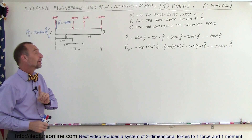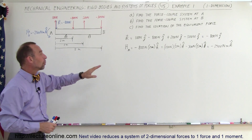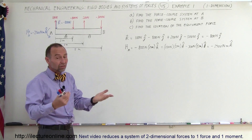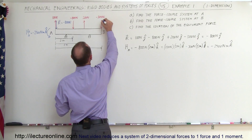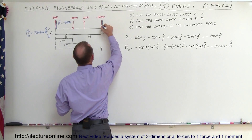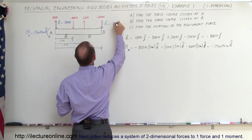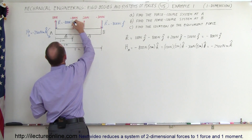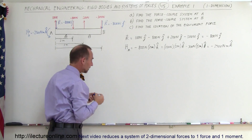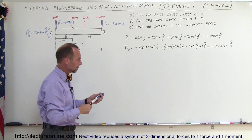We can now do the same at B. The resultant force remains the same: minus 800 Newtons in the j-direction. We need to find the moment at point B.